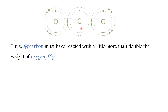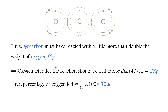Thus, 6g of carbon must have reacted with a little more than double its weight of oxygen, which is 12g. This implies that the oxygen left after the reaction should be a little less than 40 - 12, i.e., 28g. Therefore, the percentage of oxygen left is approximately 28/40 × 100, which is 70%.